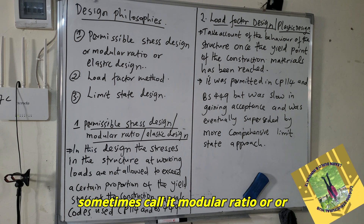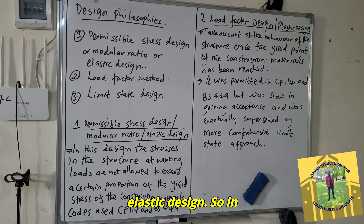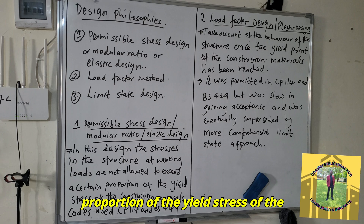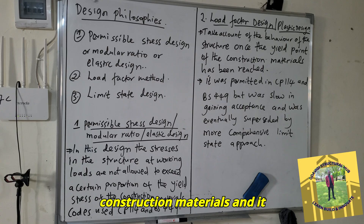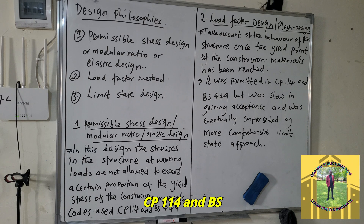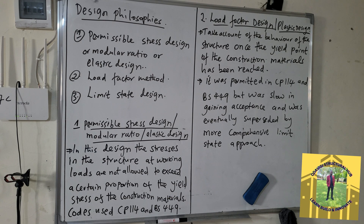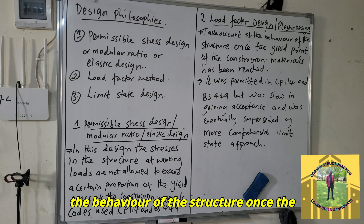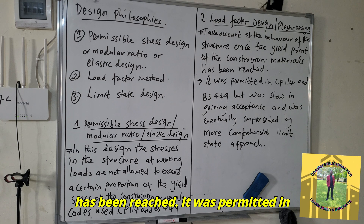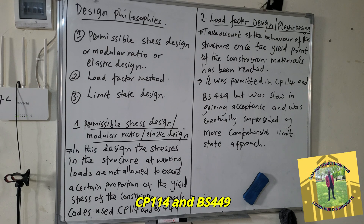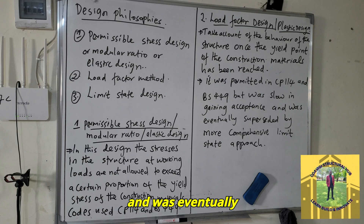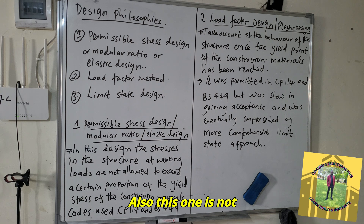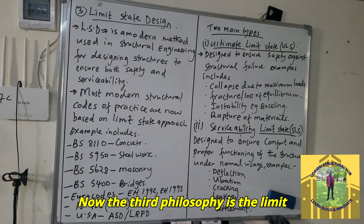In permissible stress design, the stresses in the structure at working loads are not allowed to exceed a certain proportion of the yield stress of the construction materials. It is commonly used in CP114 and BS449 — the oldest codes of design. The load factor method, or plastic design, accounts for the behavior of the structure once the yield point has been reached. It was permitted in CP114 and BS449 but was eventually superseded by the more comprehensive limit state approach and is not used today.